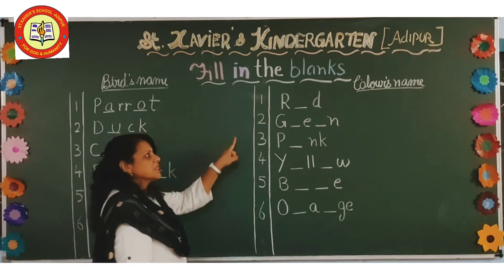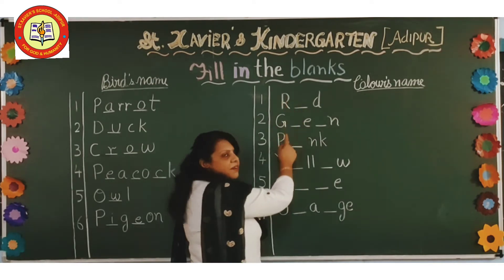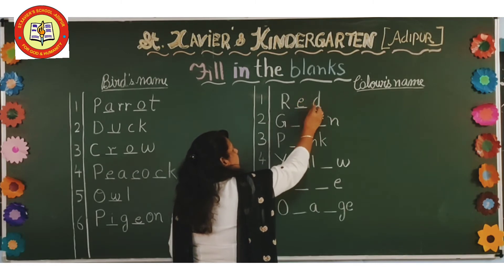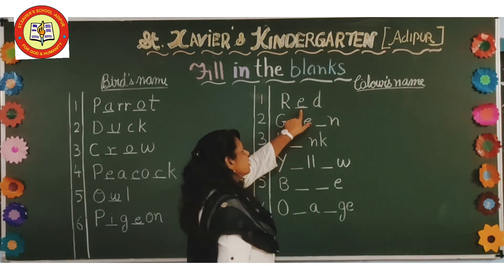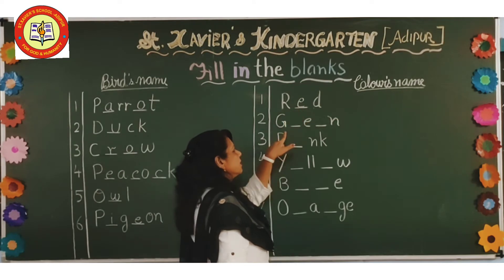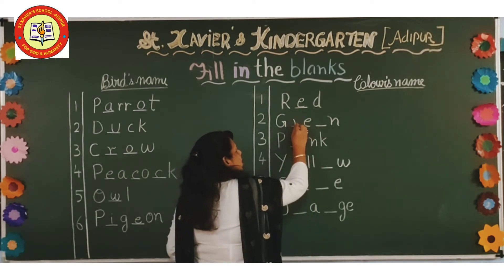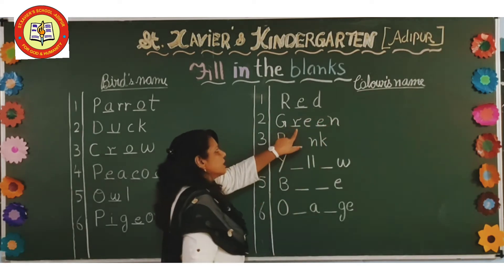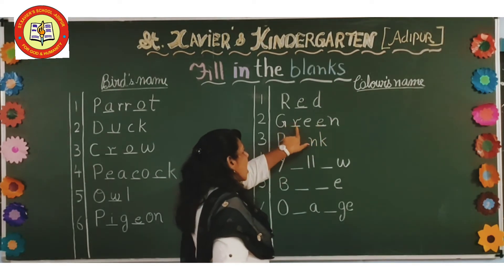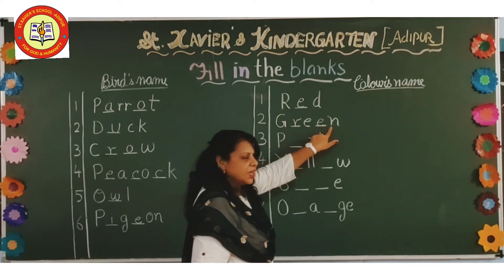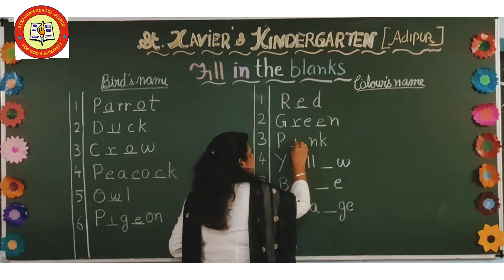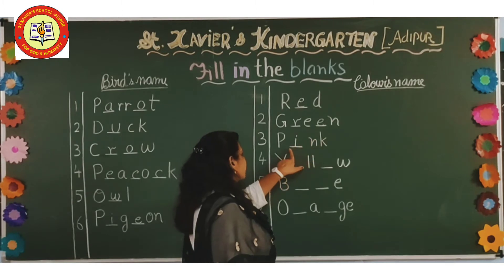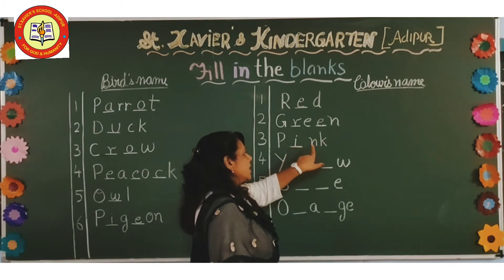Then colors' names. So first one is red. R-E-D, red. So we have to fill here E. Then green. G-R-E-E-N. We have to fill here R and E. Then pink. P-I-N-K, pink. So we have to fill here I.